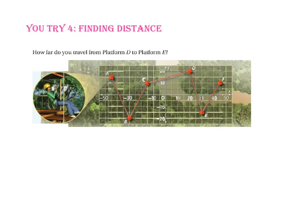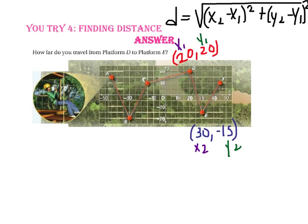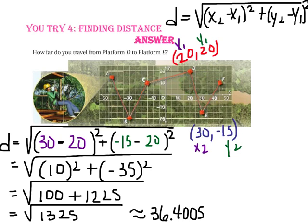Pause the video and do U-Try number 4. Let's see how far we travel from platform D down to platform E. Write the distance formula, identify the coordinates for points D and E, identify x₁, y₁ and x₂, y₂, then substitute and simplify. Remember that each grid unit is 5 meters, so multiply your answer by 5. That gives us approximately 182 meters.